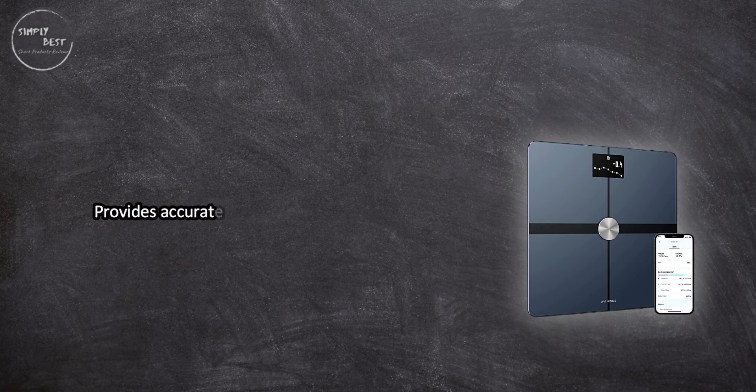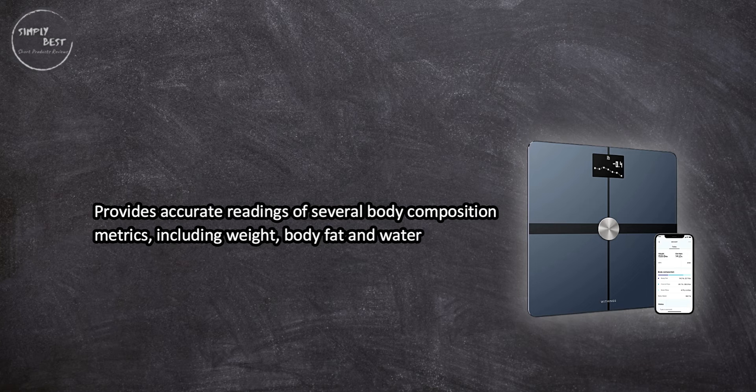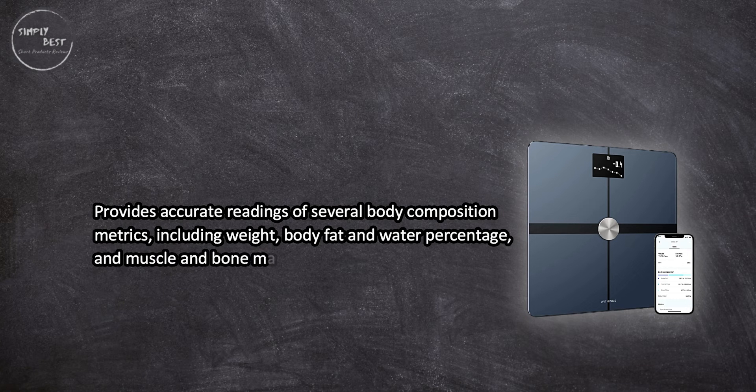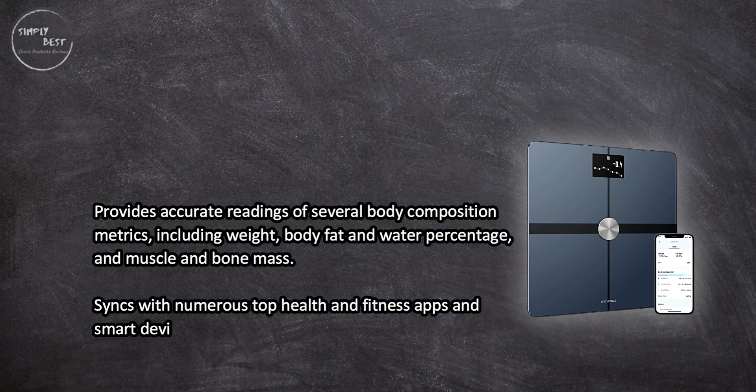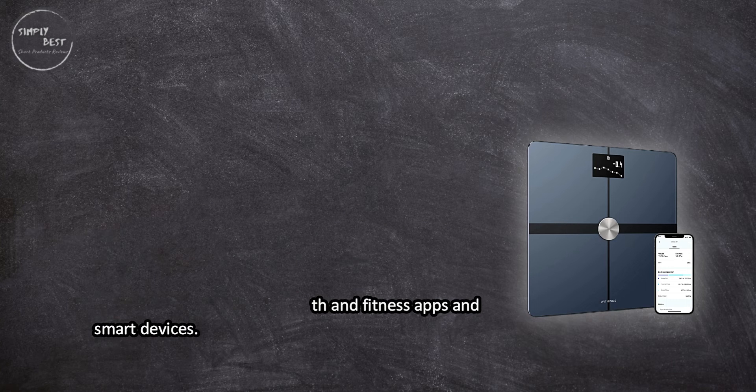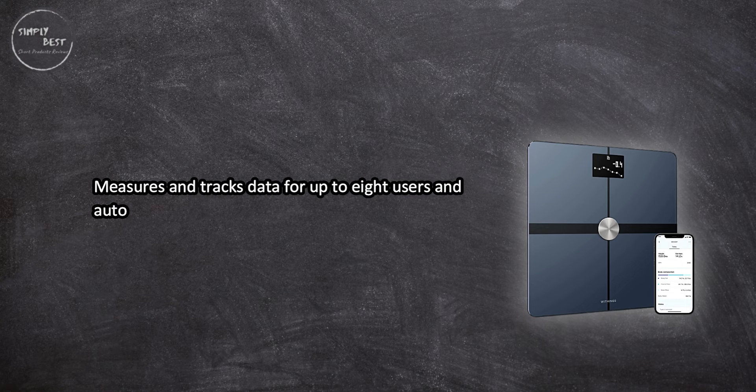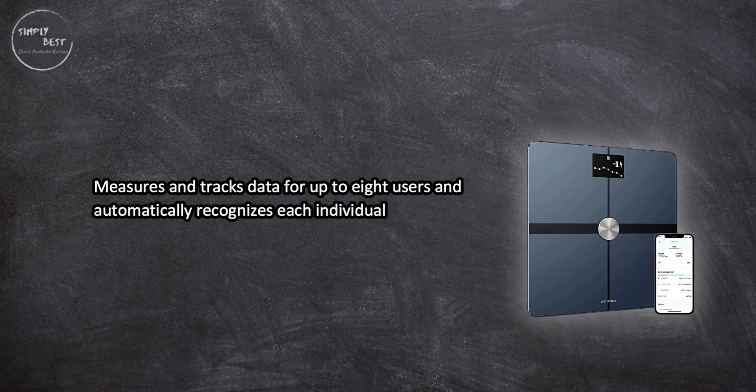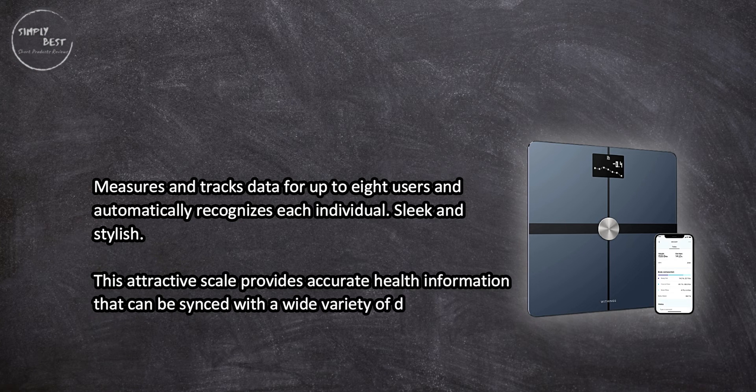Provides accurate readings of several body composition metrics including weight, body fat and water percentage, and muscle and bone mass. Syncs with numerous top health and fitness apps and smart devices. Measures and tracks data for up to eight users and automatically recognizes each individual. Sleek and stylish, this attractive scale provides accurate health information that can be synced with a wide variety of devices and health apps.